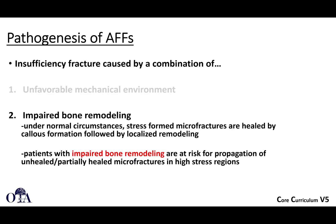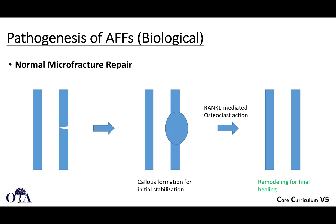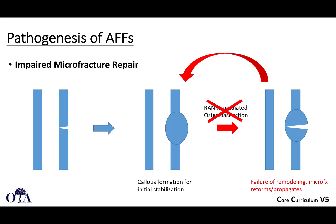An unfavorable mechanical environment may predispose certain patients, but that's not enough — you also typically need some kind of impaired bone remodeling. Normally, when stress causes microfractures, these are healed by callus followed by localized remodeling via RANK-L-mediated osteoclast action. But if you have impaired bone remodeling — for instance, from medications that are inhibiting this process — you may have failure of remodeling, and then microfractures can reform and propagate. This propagation in high-stress regions is how atypical femur fractures develop.